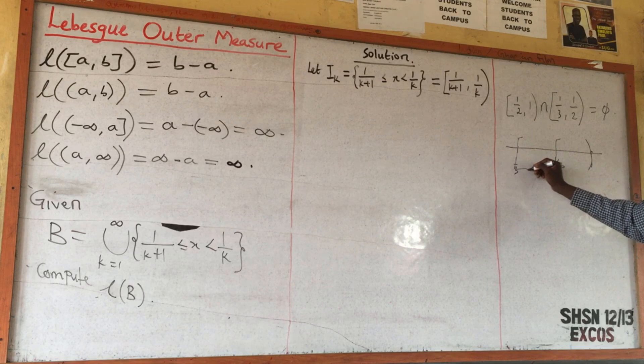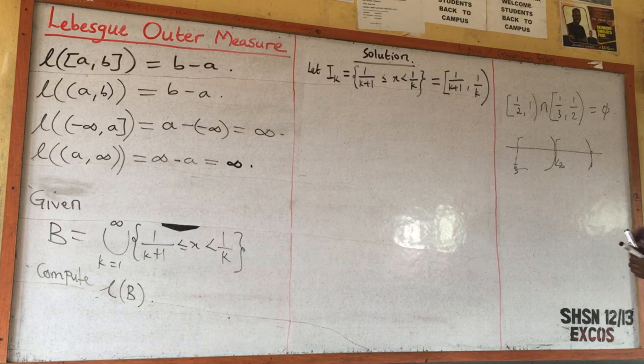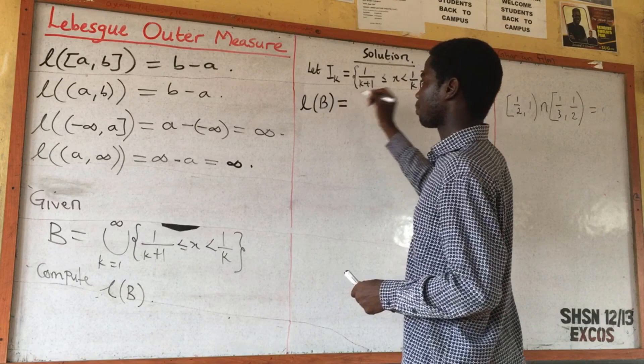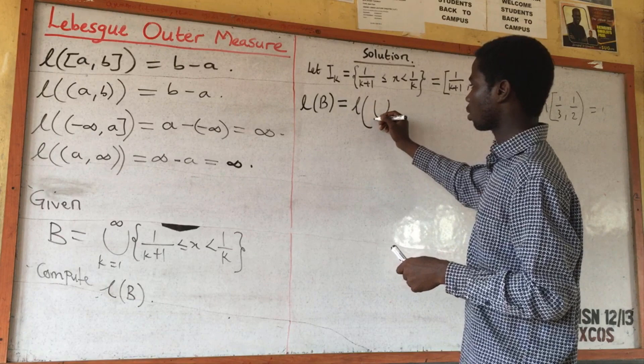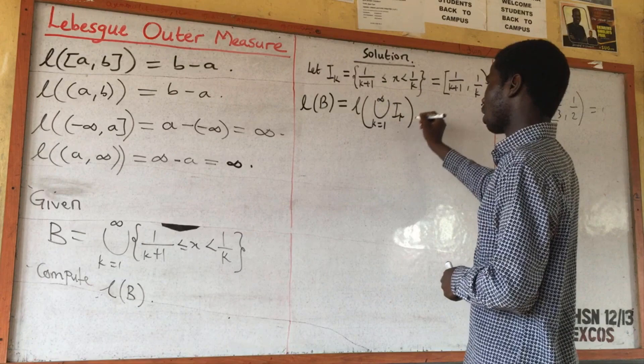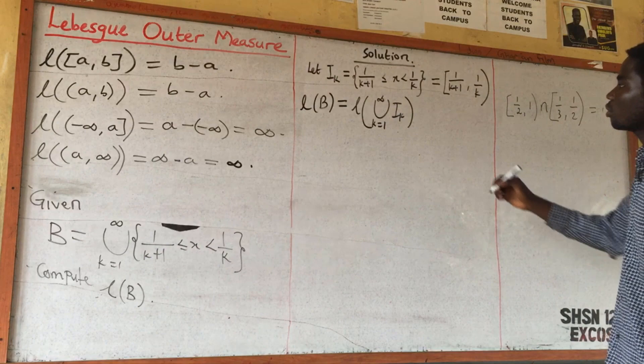You can see that they are disjoint — the intersection is empty. Since B equals the union of k from 1 to infinity of I_k, the length of B equals the length of that union. By the property of length, the union comes outside and becomes a summation, so it becomes summation k from 1 to infinity of the length of I_k.